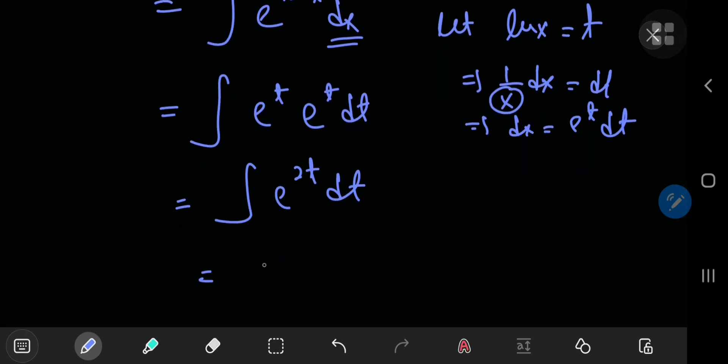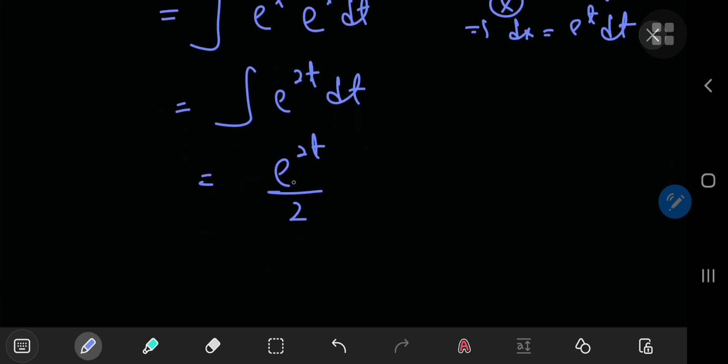And we all know how to integrate this right? This is pretty simple. It's e to the 2t divided by 2, and if you want to go back into the x world, we see that t was in fact the natural log of x.